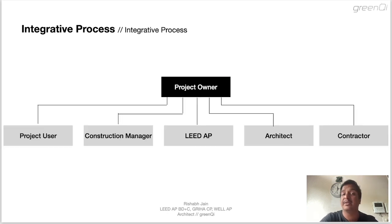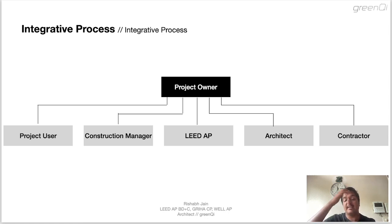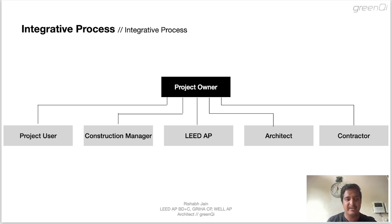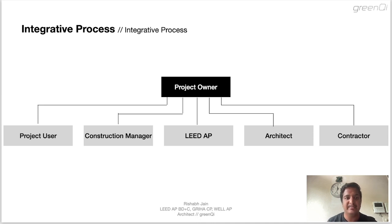Now let us understand what is an integrative process. The integrative process deconstructs the linear nature of the conventional process and establishes a multidisciplinary team approach. In this case, the integrative project team is formed before the beginning of the project. There is a project owner, and the project owner has a project user, construction manager, lead AP, architect and contractor all reporting to him in an integrative process.